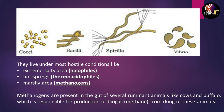If bacteria are living in hot springs where hot water outlets are present, they are called thermoacidophiles. When they are living in marshy areas where methane is present, they are called methanogens. Methanogens are present in ruminant animals like cows and buffaloes, and are responsible for the production of biogas or methane from the dung of these animals.